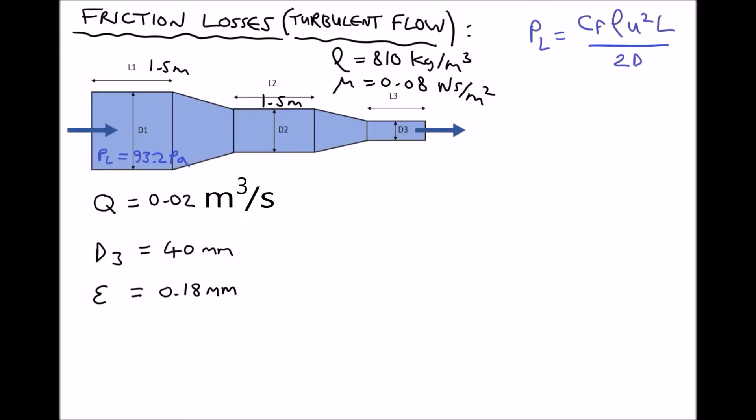In this video we're going to continue with our previous example, except this time we're going to be calculating the pressure losses due to friction in the third section of our pipe work. And as we're going to see, here we're going to have turbulent flow.